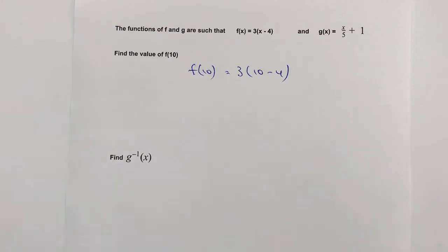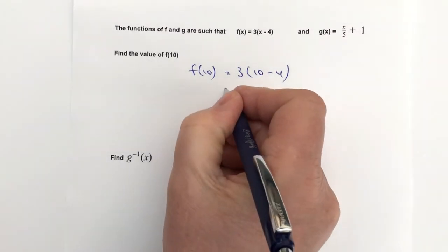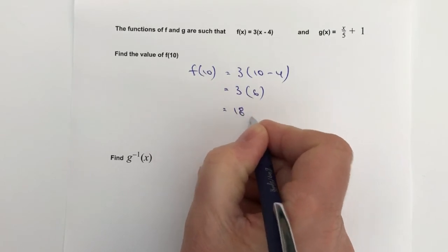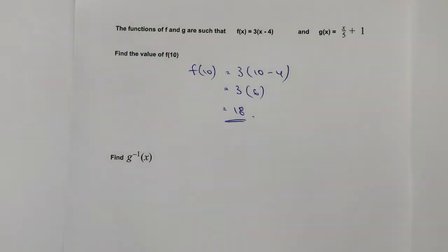So 10 minus 4 is going to be 6, so you've got 3 times 6, and that's going to be 18. So the function of 10 is going to be a value of 18.